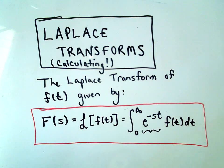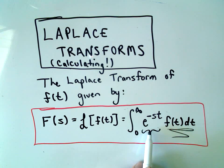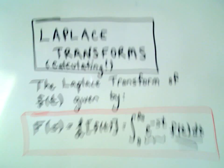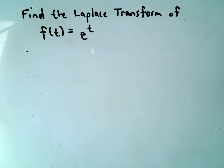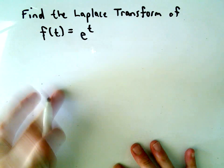To calculate the Laplace transform, take your original function, multiply it by e to the negative st, and then evaluate the improper integral, which can be moderately tedious — but that's the gist of it.